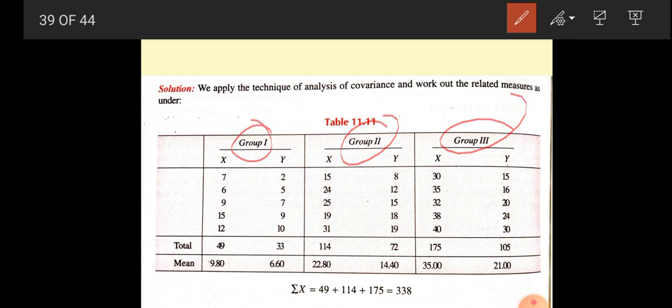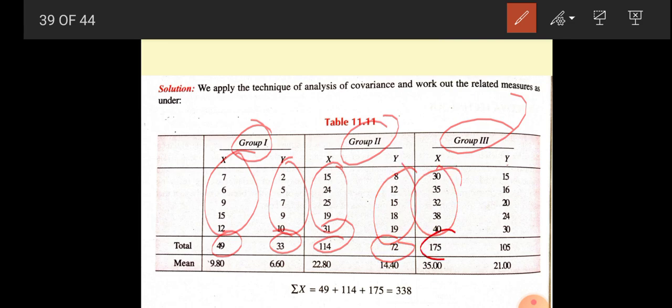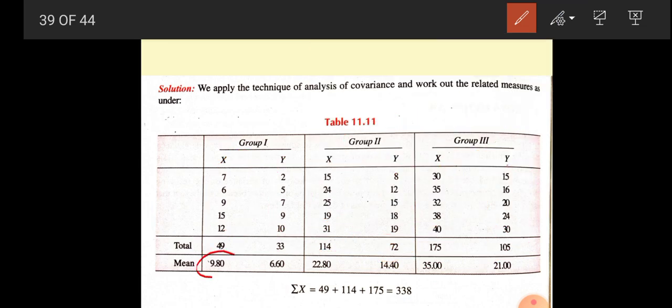Group 1, group 2, group 3. If you find the totals: 49, 33, 114, 72, 175, and 105. Now we will find out the mean. So 49 divided by 5 equals 9.8. Similarly, 33 divided by 5 is 6.6, 114 divided by 5 is 22.8.